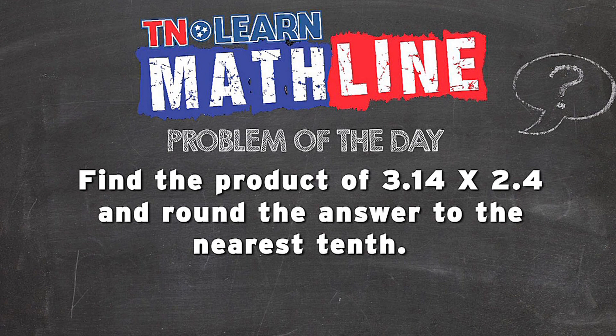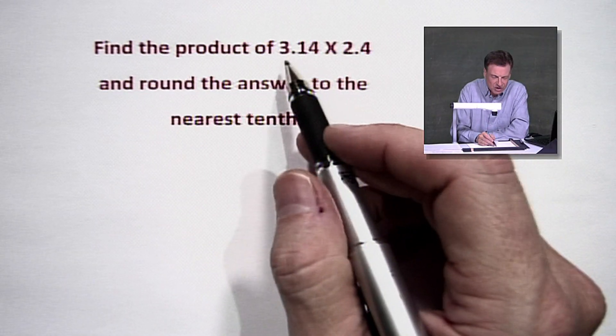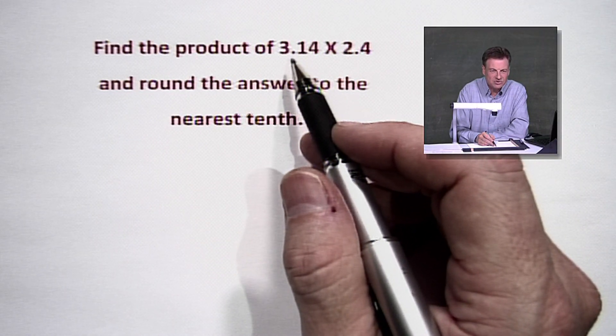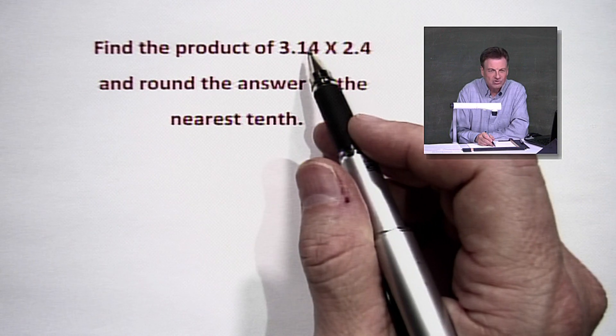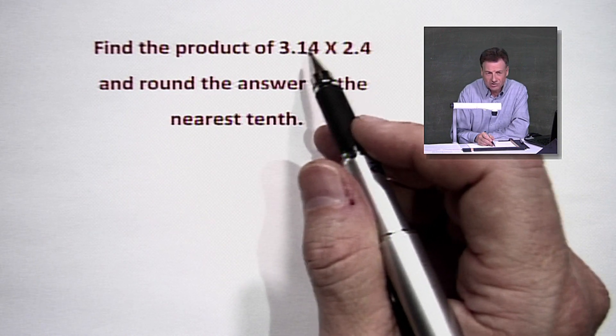So once again, we've got to find the product of 3 and 14 hundredths times 2 and 4 tenths, round the answer to the nearest tenth. Remember I mentioned that's pi? That's actually a roundoff for pi, what we usually use for pi to two decimal places or the hundredths place.